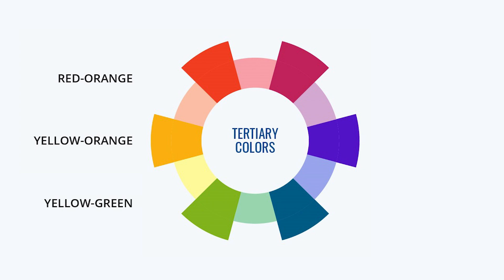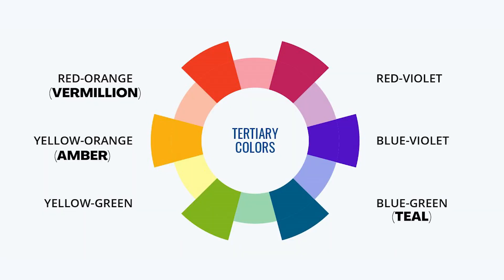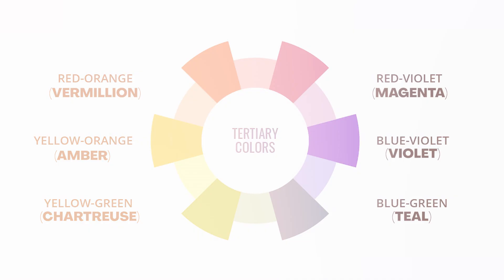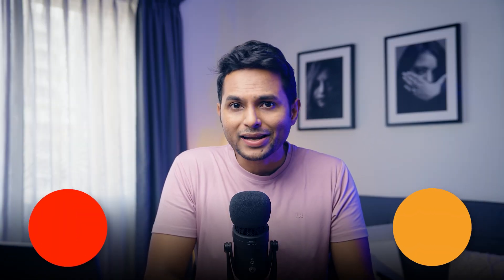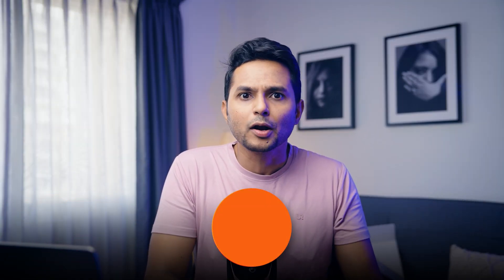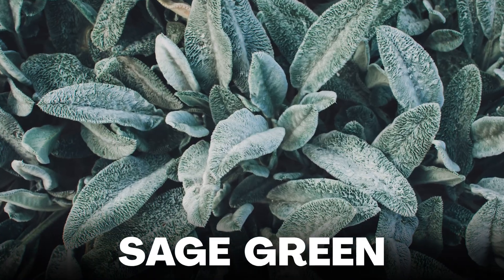Tertiary colors include red-orange, yellow-orange, yellow-green, blue-green, blue-violet, and red-violet. Sometimes these colors are given names like vermilion, amber, teal, violet, magenta, and so on. Tertiary colors are important because they expand the designer's palette. One of the most important uses of tertiary colors is creating realistic representations of nature. Nature is filled with complex hues like sage green, brick red, and sky blue, so tertiary colors are ideal for capturing these delicate tones that are neither one color nor the other.